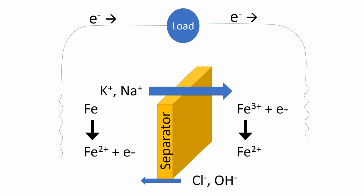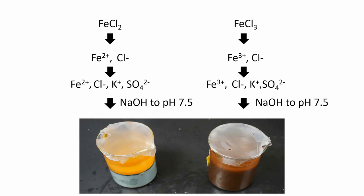How are we going to set this up? We're going to take iron chloride in the ferrous state. We're going to dissolve that, add potassium sulfate. Now we have iron ions, chloride ions, potassium ions, sulfate ions, and we're going to precipitate that with sodium hydroxide to pH 7.5. We do the same thing with ferric iron, FeCl3. Again, same conditions, potassium sulfate and precipitate to 7.5.